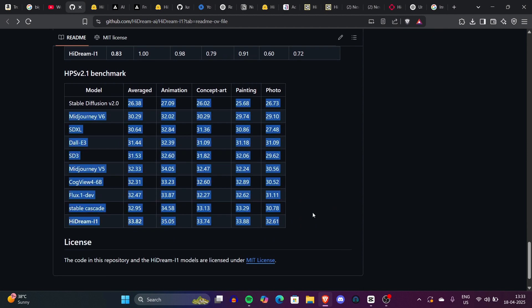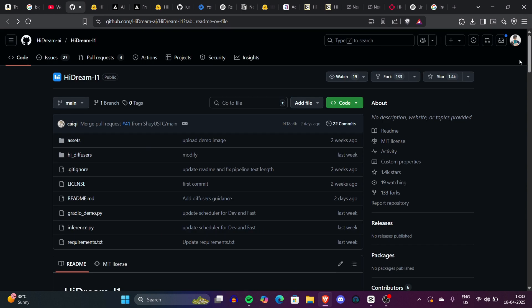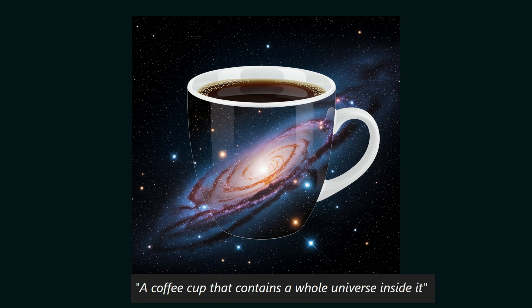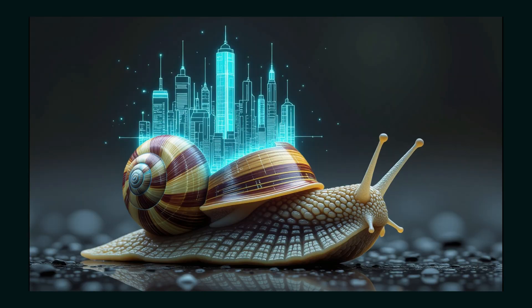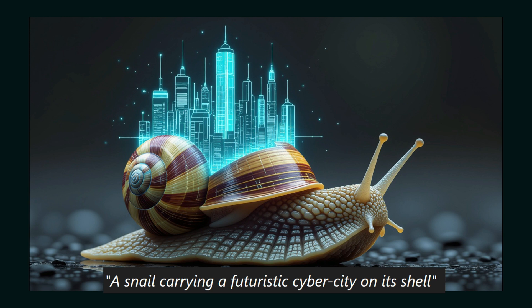Now let's check how this new model reacts to weird and wild prompts. The first prompt was 'a cup of coffee that contains a whole universe inside it' — look at this image, I never expected it to be this good. I compared it with the same prompt on the Flux model, and you can give your own opinion on which is better. Another prompt was 'a snail carrying a futuristic cyber city on its shell' — the shell looks so real, the texture of the snail is amazing. The generation speed is really impressive.